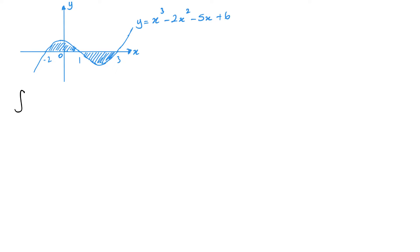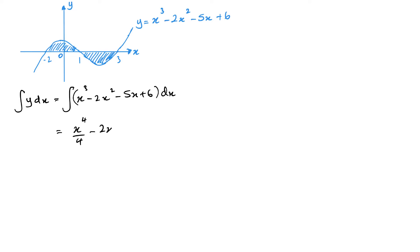First, let's integrate my y. So that's me integrating x cubed minus 2x squared minus 5x plus 6 dx. And this is going to be x to the 4 over 4 minus 2x cubed over 3 minus 5x squared over 2 plus 6x. But at the moment I'm not going to put my limits on it, as I need to do them separately.